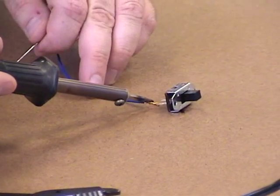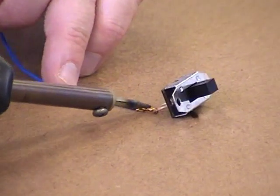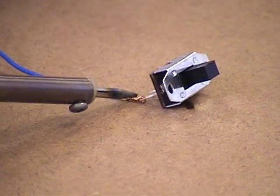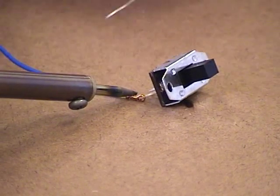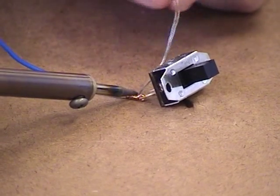Then you hold it on the joint to be soldered for about five seconds or a little more until it gets really hot. Then you poke your solder on and the solder itself will melt.